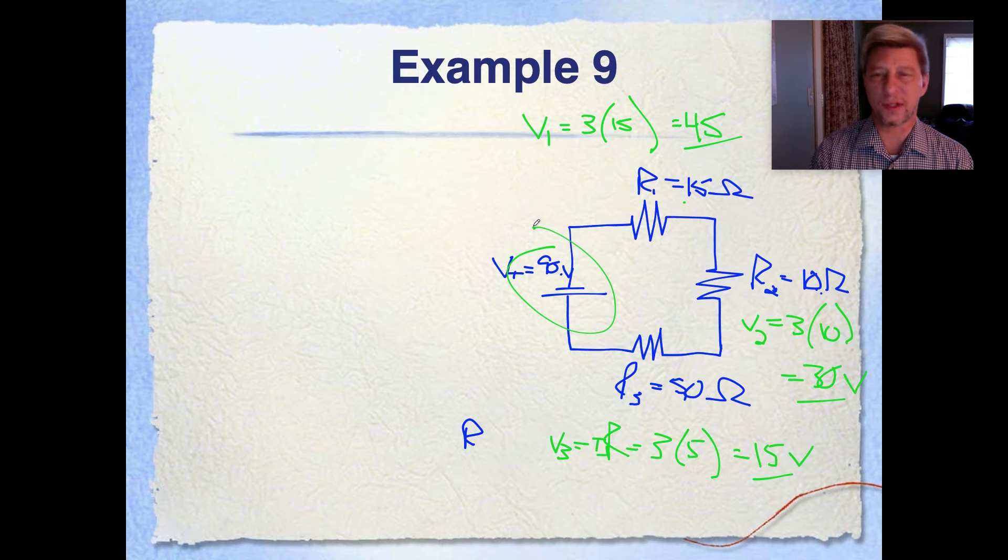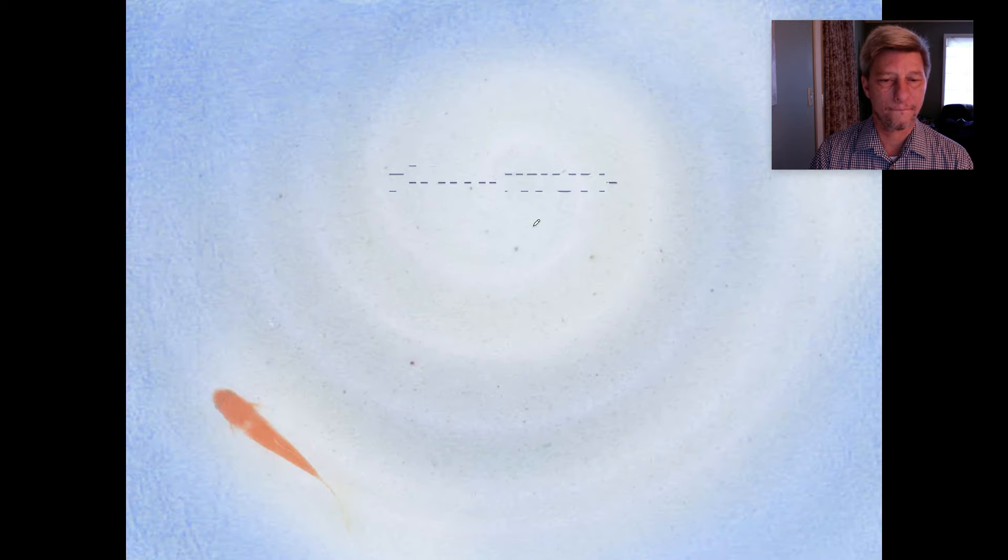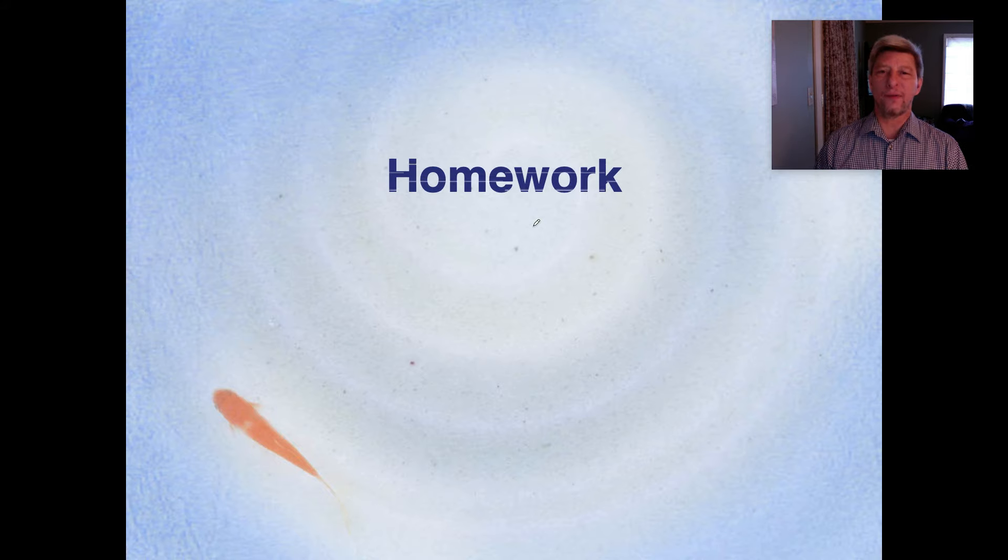We've used up every volt of potential between the negative end of the battery and the positive end, or actually this is a cell, so the negative end of the cell to the positive end of the cell. Now, that brings us to the end of this discussion on series circuits.